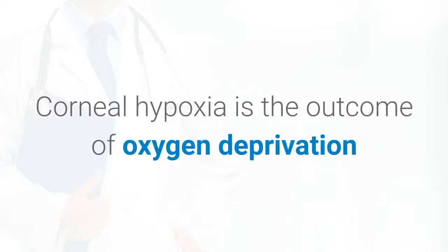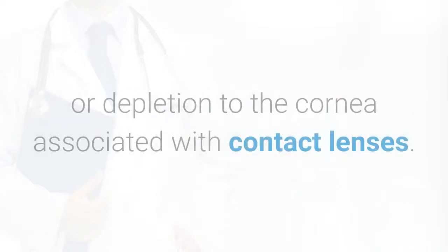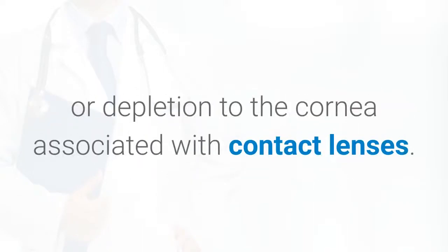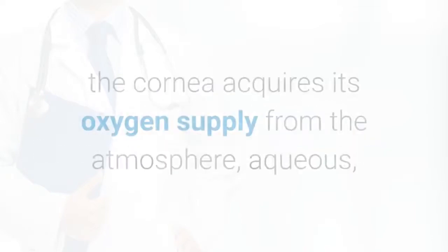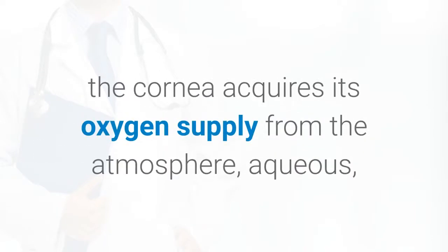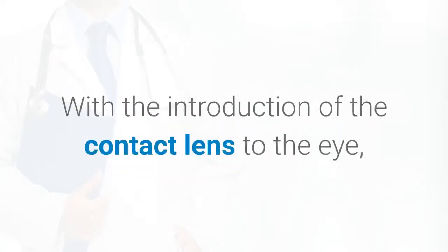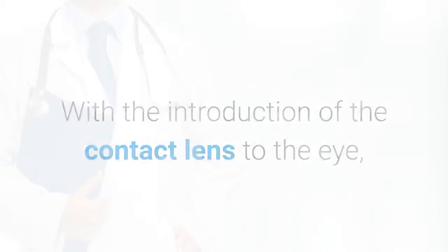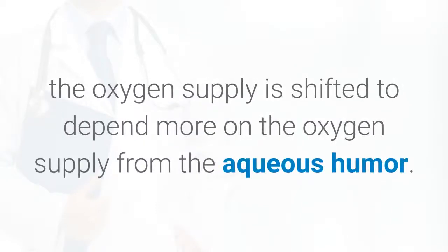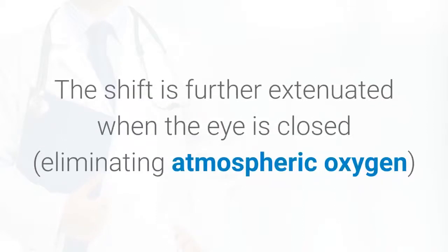Corneal hypoxia is the outcome of oxygen deprivation or depletion to the cornea associated with contact lenses. When the eye is open, the cornea acquires its oxygen supply from the atmosphere, aqueous, and limbal blood vessels. With the introduction of the contact lens to the eye, the oxygen supply is shifted to depend more on the oxygen supply from the aqueous humor.